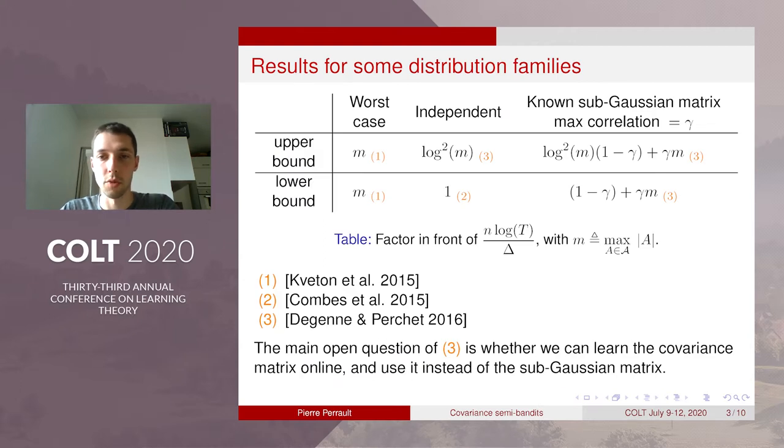So without further assumption we have those upper and lower bounds obtained by Kveton in 2015. So here m is the maximum size of an action and delta is the minimum gap positive gap between two actions. So you have a matching upper bound by the algorithm CUCB.